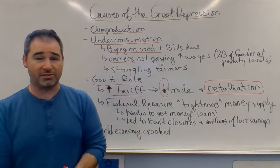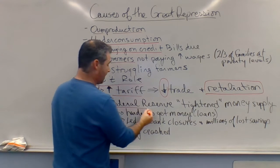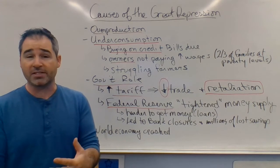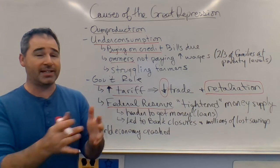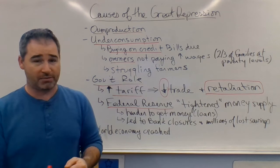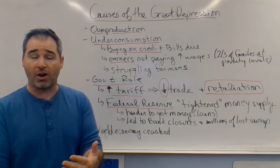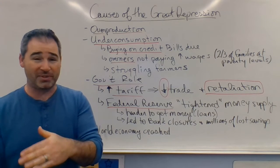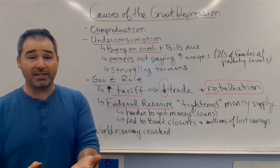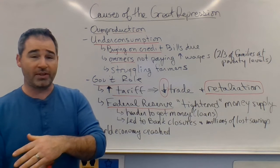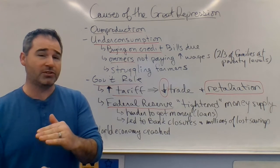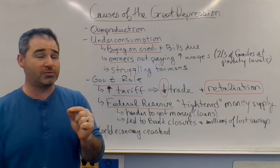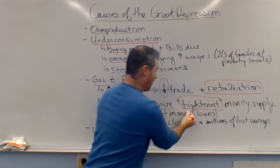The Federal Reserve, created under the Woodrow Wilson administration to control the money supply, also made drastic mistakes. In the 1920s they had what's called a loose money supply, meaning it was very easy to get loans. A lot of rich people used those easy loans not to build their businesses, but to speculate on the stock market — buying on margin, for example. So the Federal Reserve saw they'd made a mistake, and when the depression hit their response was to tighten the money supply.